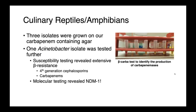Finally, because we looked at organisms that just grew on a carbapenem-containing agar regardless of what they were, we also identified an Acinetobacter species resistant to essentially all of the beta-lactams we tested, and it turned out to possess NDM1.